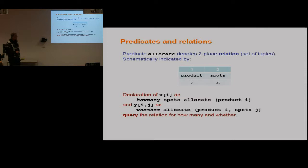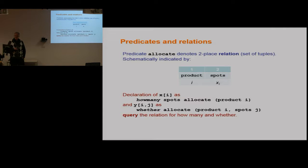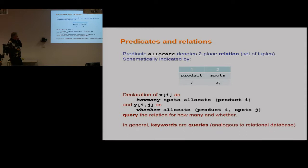For the objective function, we linearise in the usual MIP way by introducing a 0-1 variable y-prime. But y-prime is really the same as the y we've already introduced — it's one when we allocate j spots to product i. The solver recognises this because when it generates y-prime it gives it a semantic type, and since the two have the same type, they're the same variable. There is a unique type for every variable. You can think of the predicate as denoting a relation over tuples.